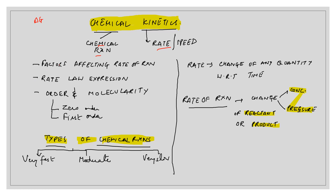In this chapter we will study the factors affecting the rate of reaction. We will cover concentration, temperature, and catalyst in detail, along with other factors like surface area. We will also do the rate law expression, and then two more terms — order and molecularity — and under order we will do zero order and first order reactions.